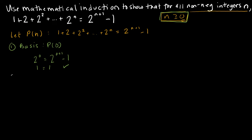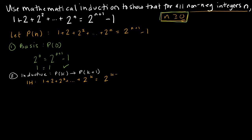Then we're going to start with our basis step. Remember the basis step proves the very first element, and we just talked about the first element being 0, so I need to show that p of 0 is true. So p of 0 would be: 2 to the 0 is equal to 2 to the 0 plus 1 minus 1. Well, 2 to the 0 is 1, and 2 to the 0 plus 1 is 2 to the 1st which is 2, minus 1 is 1. So I've shown the basis step to be true.